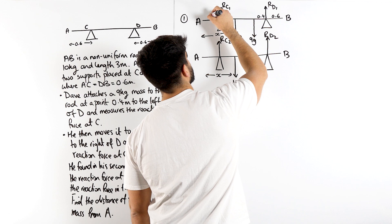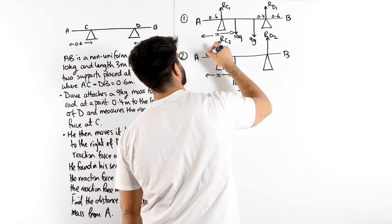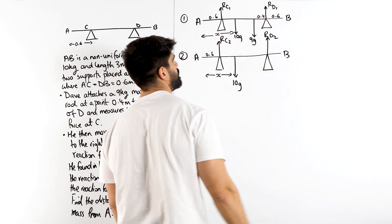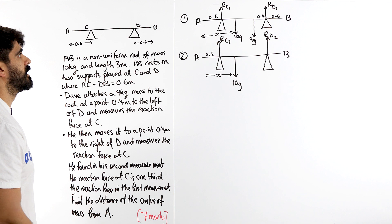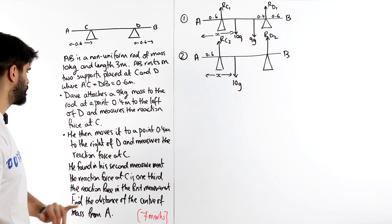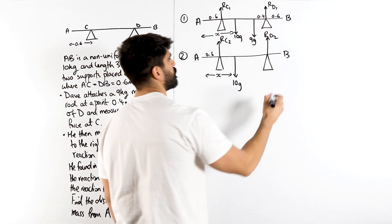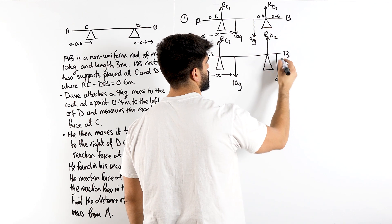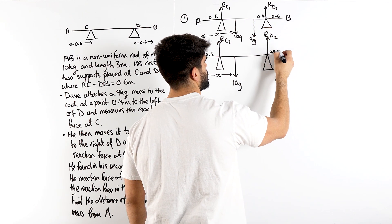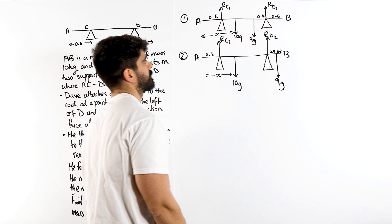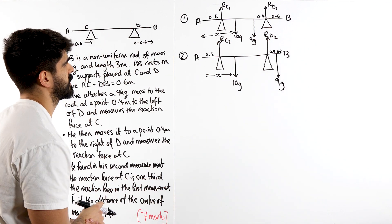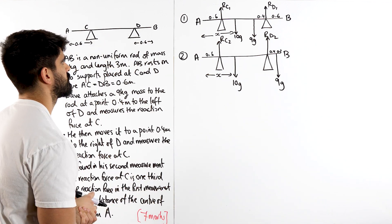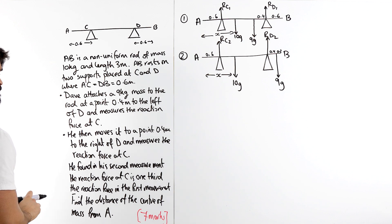This is 0.6 on either side. Here we have to be careful because in the second situation, he moved it to the right of D, 0.4. So this is 0.4, this would be 0.2 then. Okay, because that whole distance was 0.6. Now given this, somehow we're going to find out what x is.